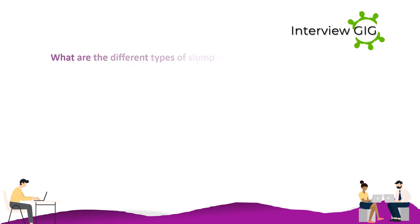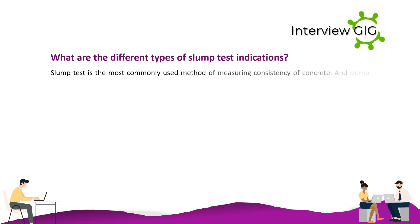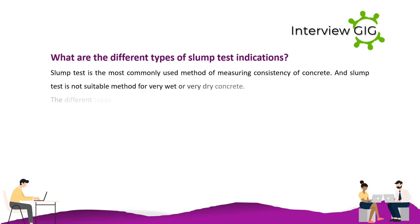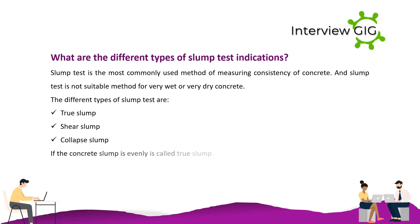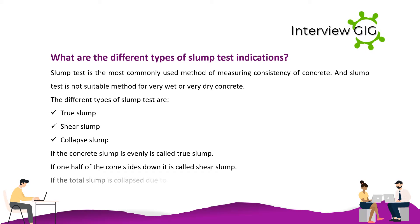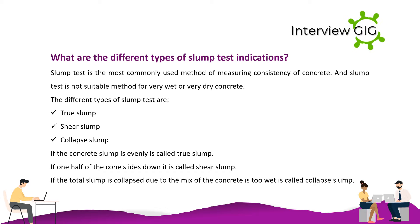What are the different types of slump test indications? Slump test is the most commonly used method of measuring consistency of concrete, and it is not suitable for very wet or very dry concrete. The different types of slump are: true slump, shear slump, and collapse slump. If the concrete slump is even it is called true slump. If one half of the cone slides down it is called shear slump. If the total slump collapses due to the concrete mix being too wet it is called collapse slump.